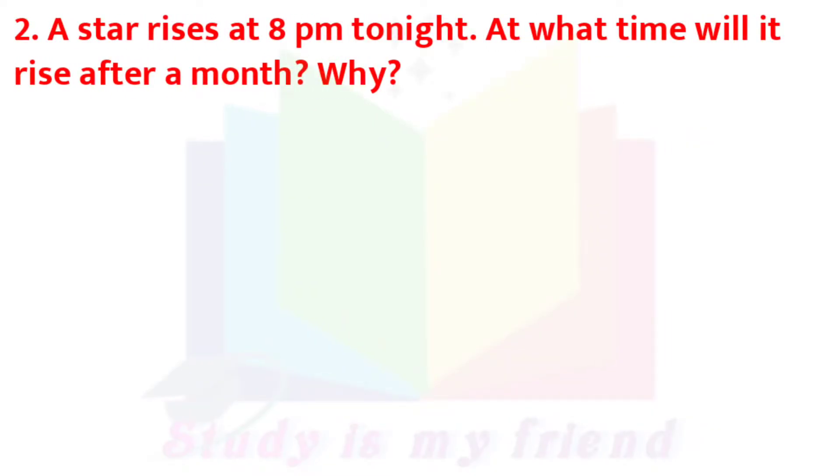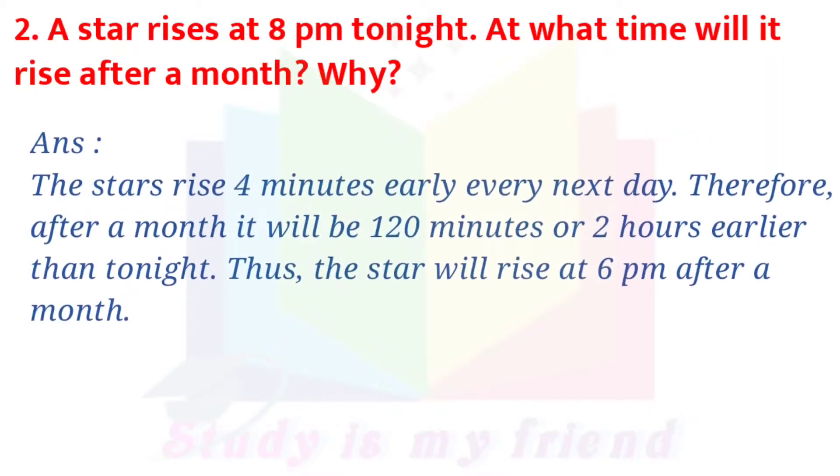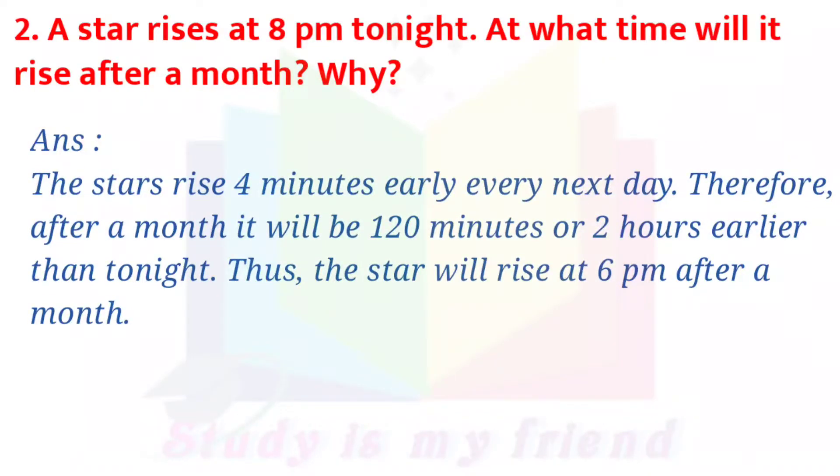2. A star rises at 8 pm tonight. At what time will it rise after a month? Why? The stars rise 4 minutes early every next day. Therefore, after a month, it will be 120 minutes or 2 hours earlier than tonight. Thus, the star will rise at 6 pm after a month.